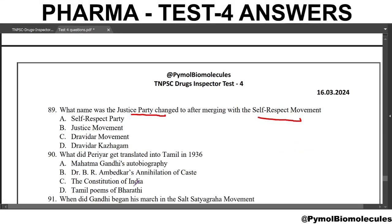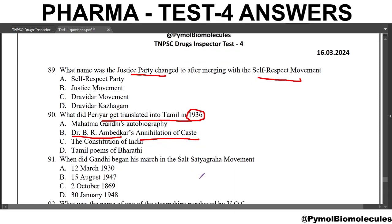Next question: what did Periyar get translated into Tamil in 1936? He translated Dr. B.R. Ambedkar's book Annihilation of Caste into Tamil.